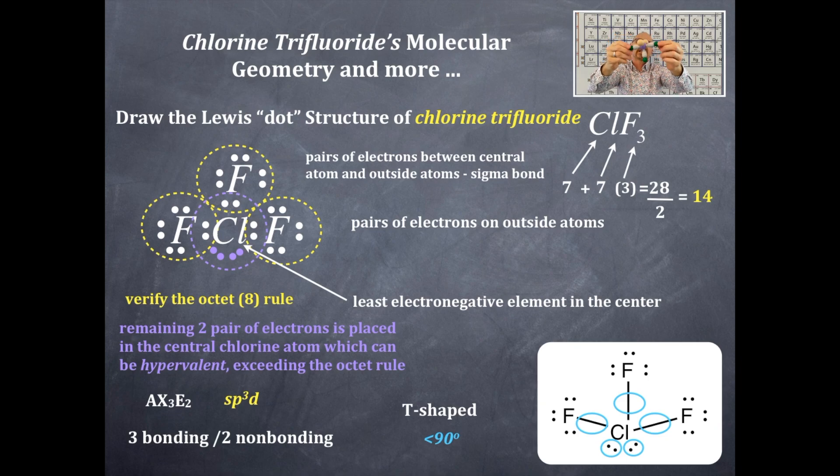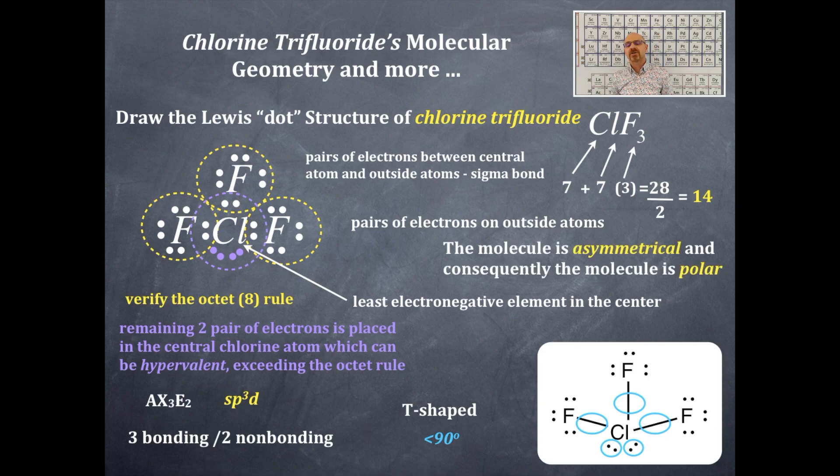In fact, any time that it is T-shaped or diasphenoidal like the previous video, the shape itself is asymmetric. Therefore, it is most certainly polar no matter what atoms are on the outside. It's always going to be polar. And then here is that answer right there in terms of the polarity. T-shaped is always polar. There's the T-shape there for you. Those are two lone pairs of electrons compressing those bond angles.